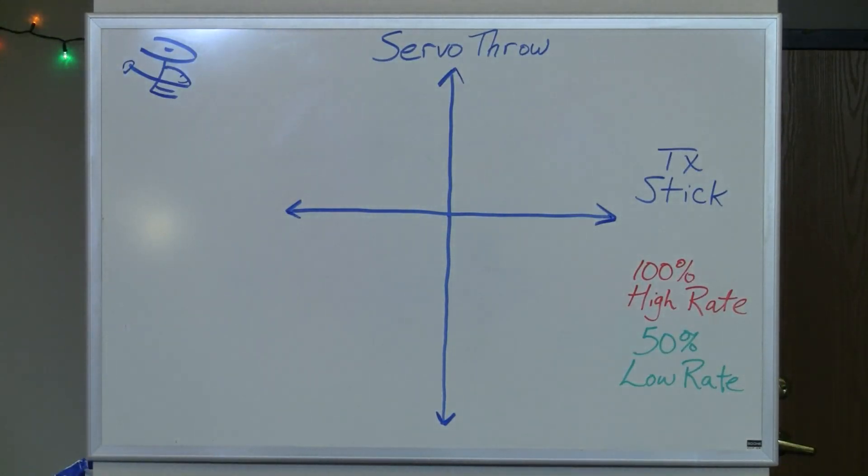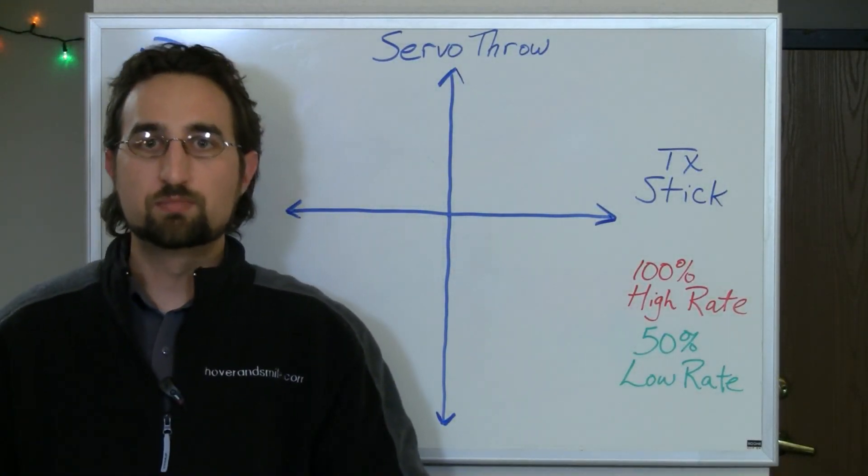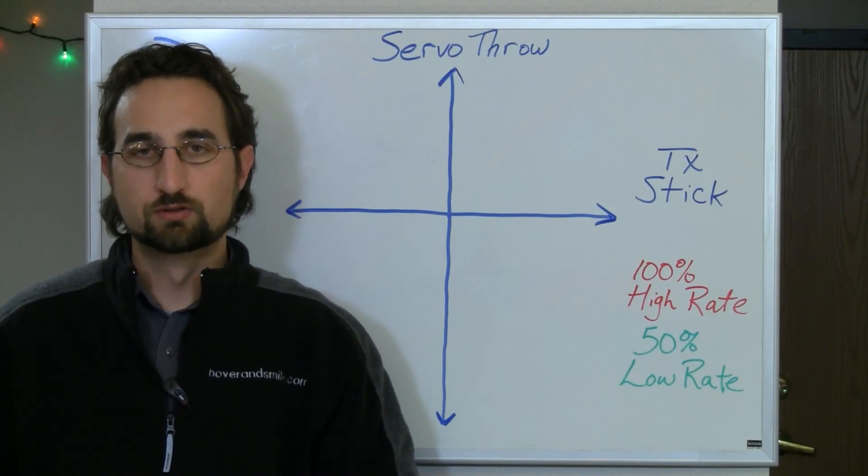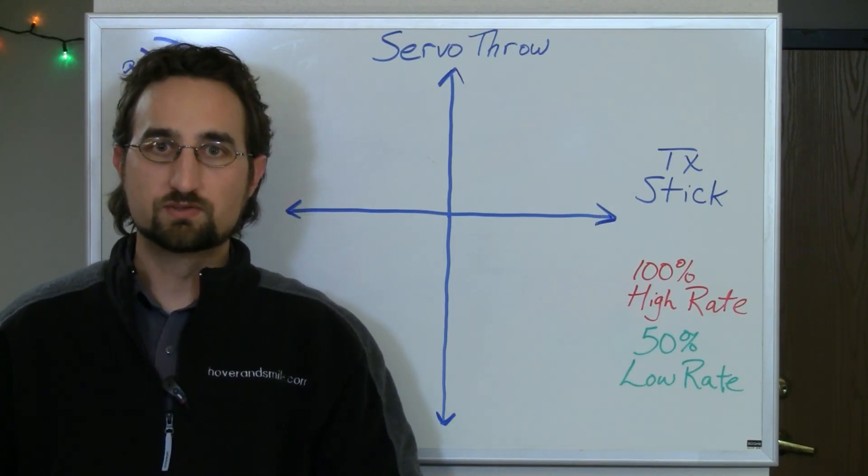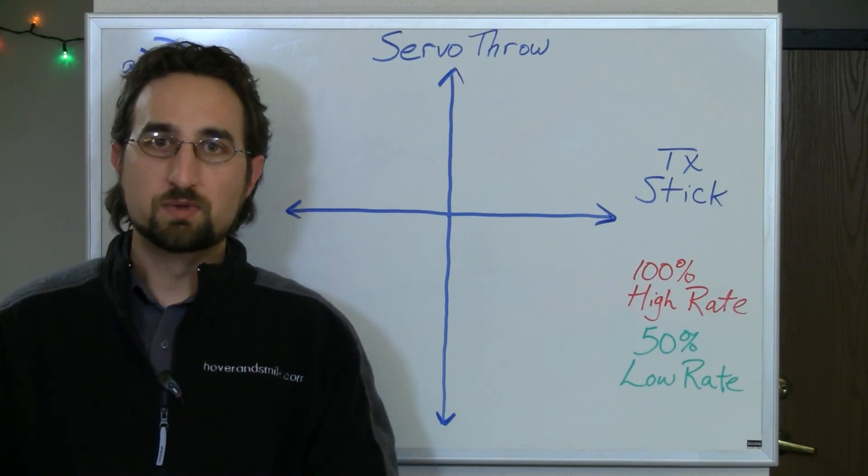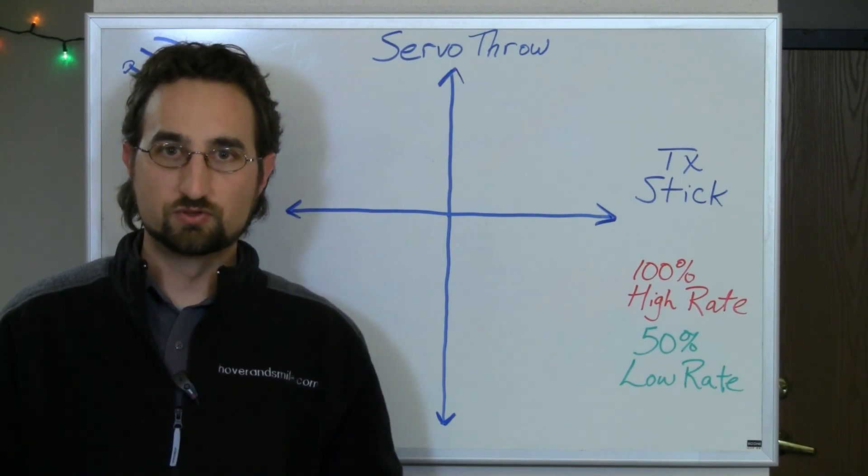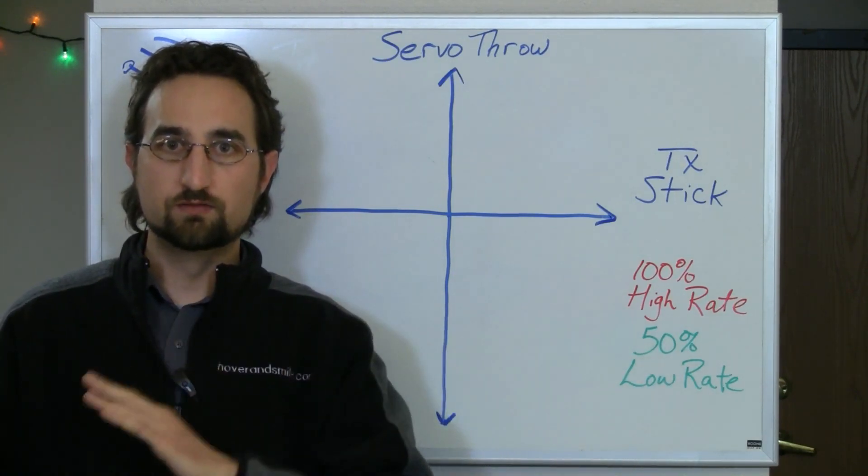That is done by these servos here. That servo movement can be controlled and manipulated in flight by applying dual rate and exponential. So that's what we're covering here in this video series is how to take dual rate and exponential, why you would want to modify the characteristics of your servo arm throw and change that in flight.